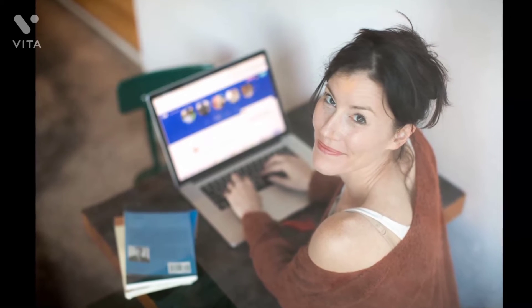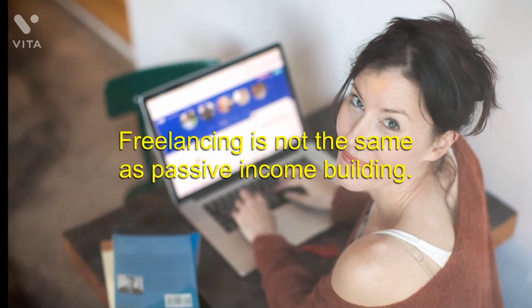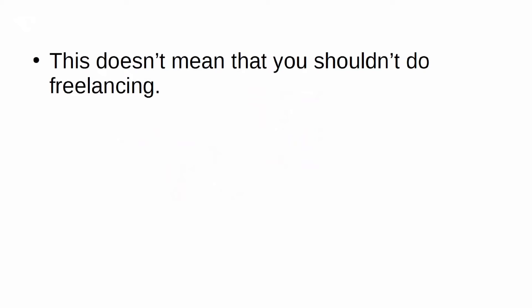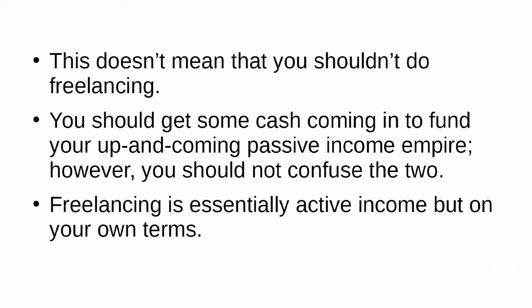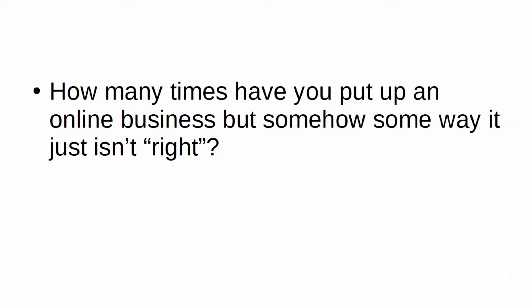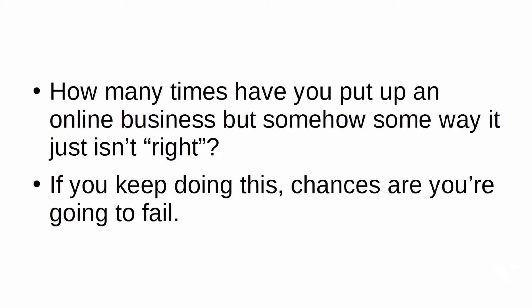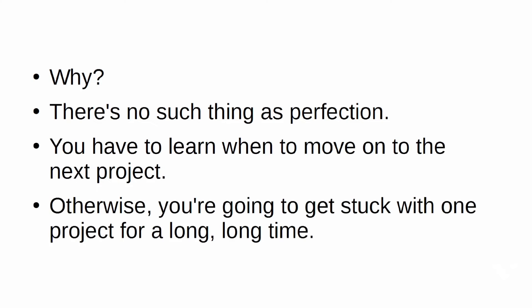You settle for quick freelancing money: if you confuse building a passive income with making money doing side jobs online for other people, you're doing it wrong. Freelancing is not the same as passive income building. You should get some cash coming in to fund your up-and-coming passive income empire, but you should not confuse the two. Freelancing is essentially active income, but on your own terms. You work your model to perfection: how many times have you put up an online business but it just isn't right? If you keep doing this, chances are you're going to fail — there's no such thing as perfection. You have to learn when to move on to the next project.